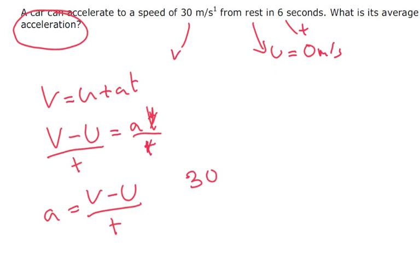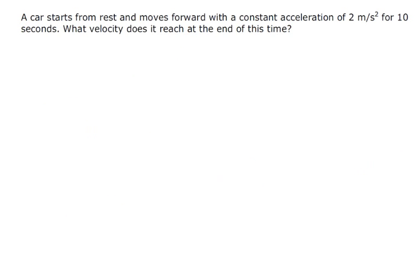So let's put some numbers in. So V is 30 minus 0, all divided by time, which is 6 seconds. So 30 divided by 6 is 5 metres per second squared. That's our final answer.